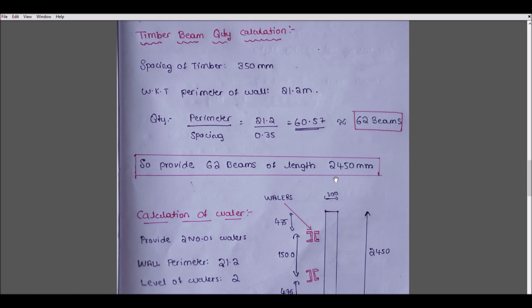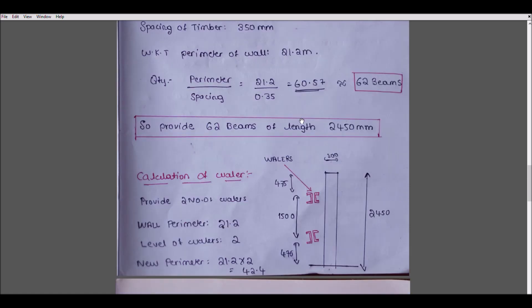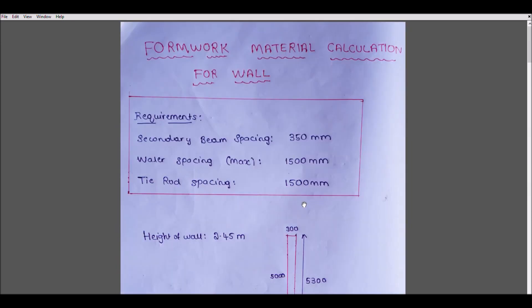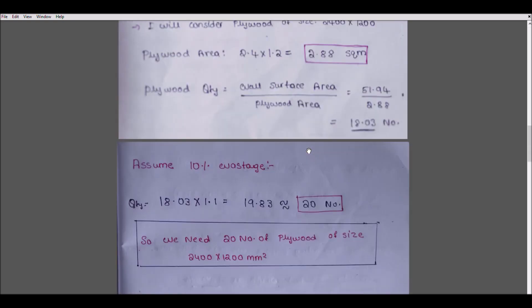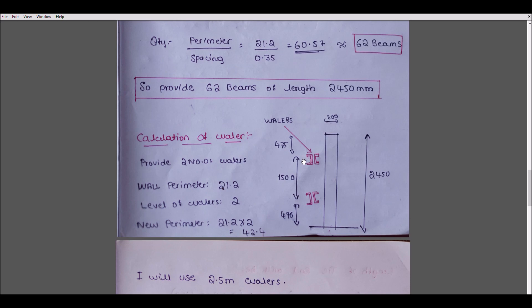Now wailer calculation. You might ask how much wailer I should give for this 2.45 height. In the requirements, we calculated the wailer spacing as 1500mm. It should not exceed center-to-center spacing of 1500mm. So I put 1500mm here, then the remaining 475mm placed here, 475mm here. The concrete pressure is less at the top and more at the bottom.